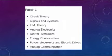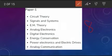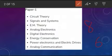Paper 1 contains 8 subjects — remember, 8 subjects — whereas Paper 2 contains 6 subjects. Paper 1 includes: circuit theory, signals and systems, EM theory, analog electronics, digital electronics, energy conservation, power electronics and electric drives, and analog communications.